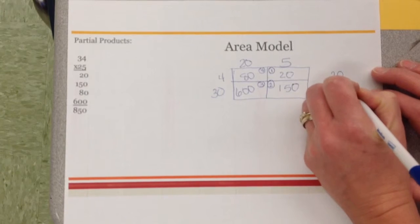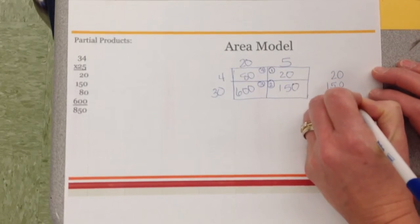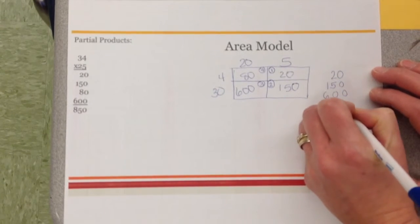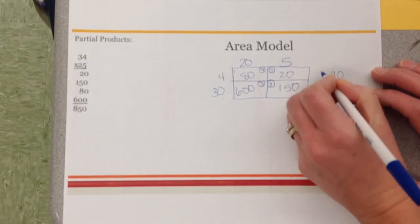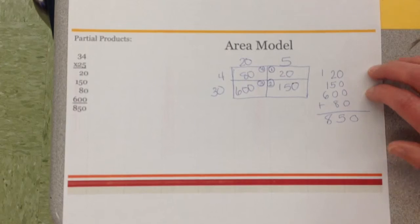You would have taken your partial products and you would have added them up. And you would have gotten 850.